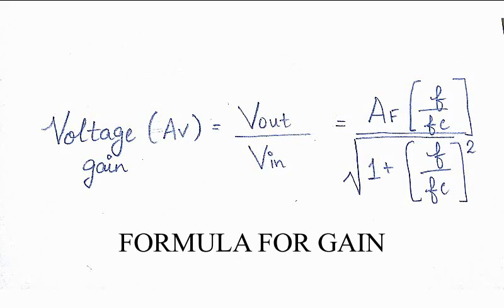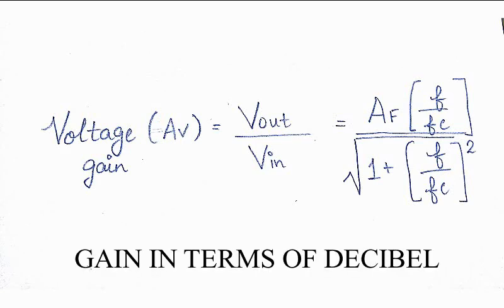Thus, the active low pass filter has a constant gain AF from 0 Hertz to the high frequency cutoff point FC. At FC, the gain is 0.707 AF, and after FC it decreases at a constant rate as the frequency increases. That is, when the frequency increases by 10-fold (one decade), the voltage gain is divided by 10. This formula represents the voltage gain in terms of decibels: Av = 20 log(Vout/Vin) to the base 10.